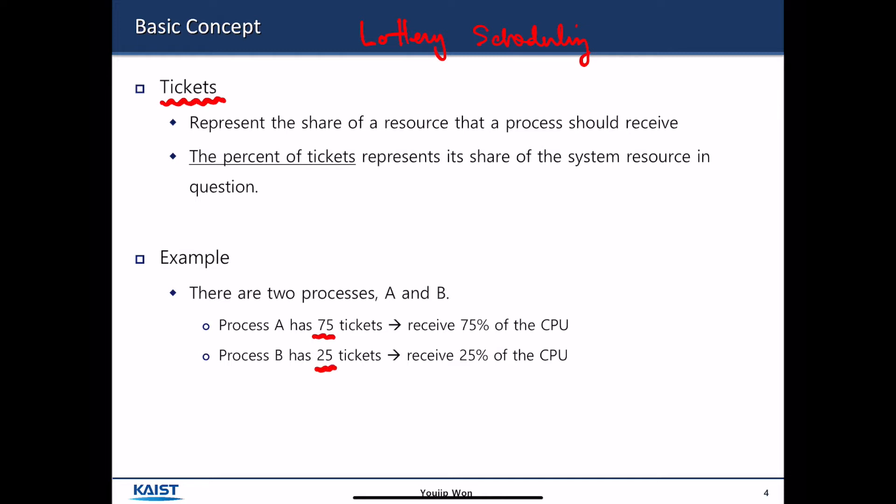Then, it means that process A receives 75% of the CPU cycles because there are 100 tickets in total. On the other hand, process B receives 25 tickets out of 100. So it receives 25% of the CPU cycles. That's the concept of tickets. It's something like a Lottery Ticket.